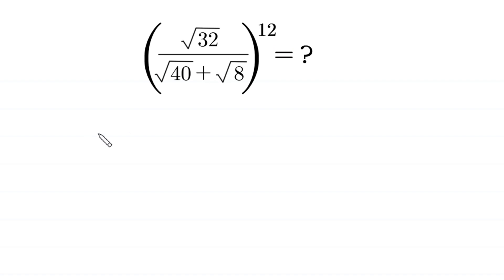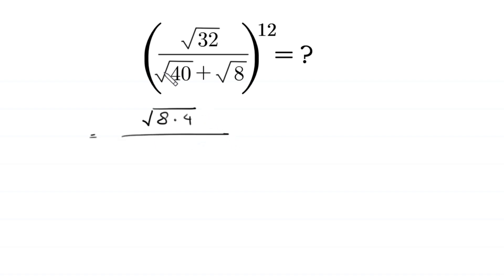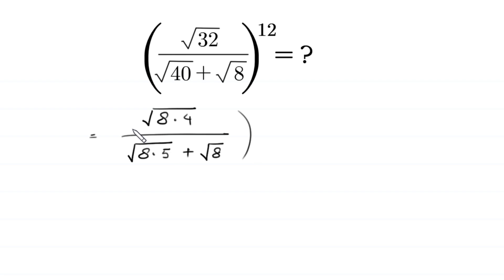This expression can be rewritten: square root of 32 can be written as square root of 8 times 4, divided by square root of 40, which can be written as square root of 8 times 5, plus square root of 8, whole to the power 12.